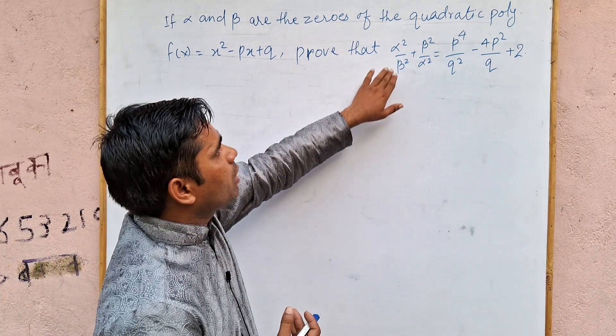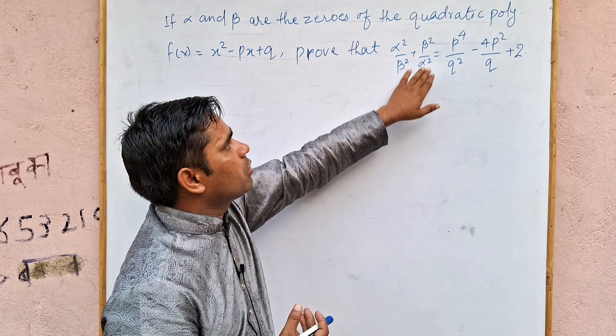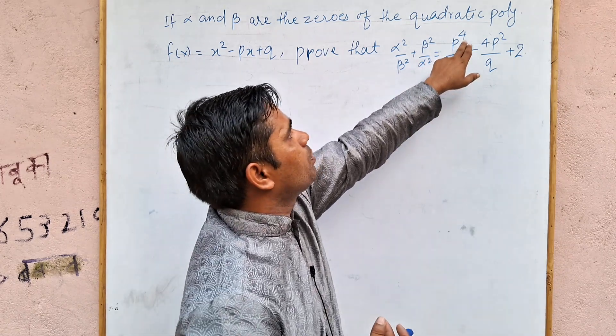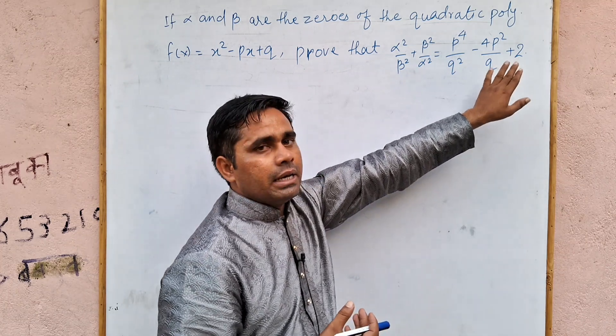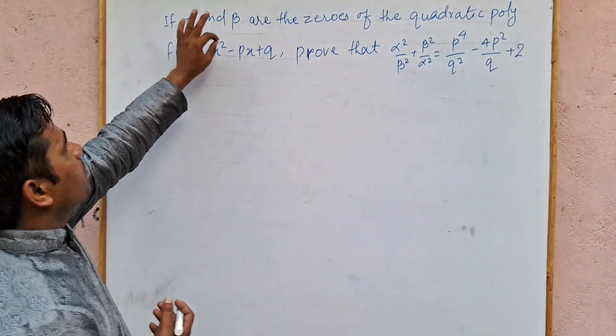Prove that alpha square upon beta square plus beta square upon alpha square is equal to p raised to the power 4 upon q square minus 4p square upon q plus 2. So we have to prove that alpha and beta are zeros.